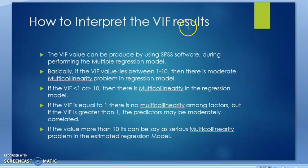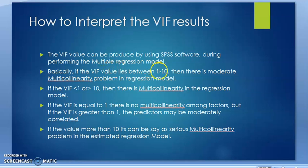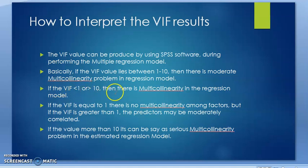How to interpret the VIF result? The VIF value can be produced by using SPSS software when performing the multiple regression model. Basically, if the VIF value lies between 1 and 10, then there is moderate multicollinearity problem in the regression model. If the VIF value is less than 1 or more than 10, then there is strong or serious multicollinearity in the regression model.